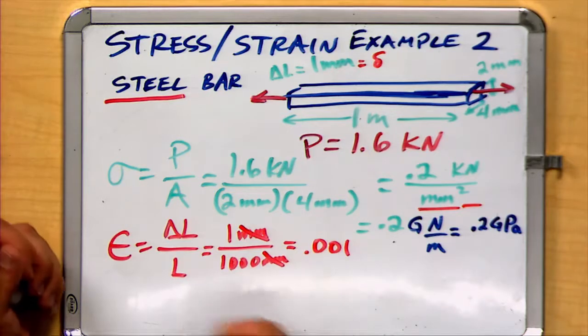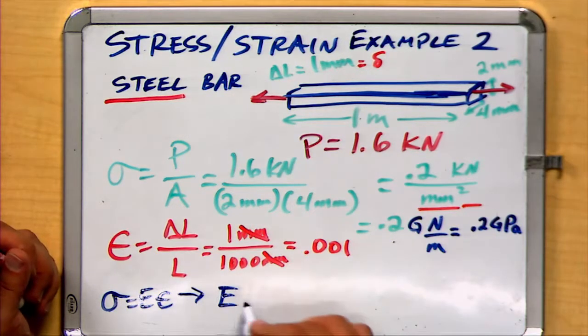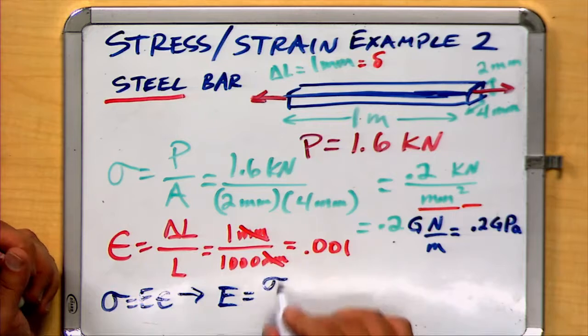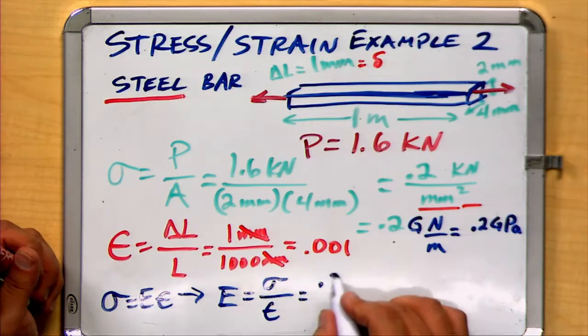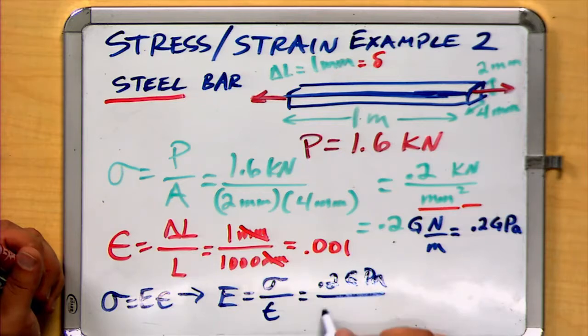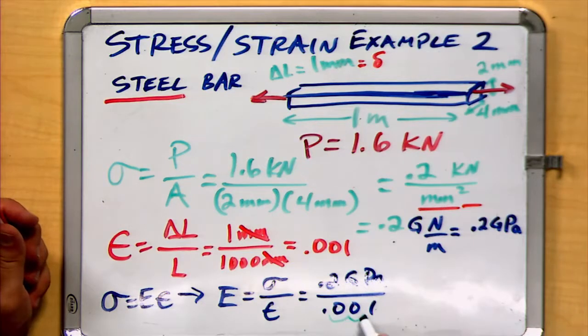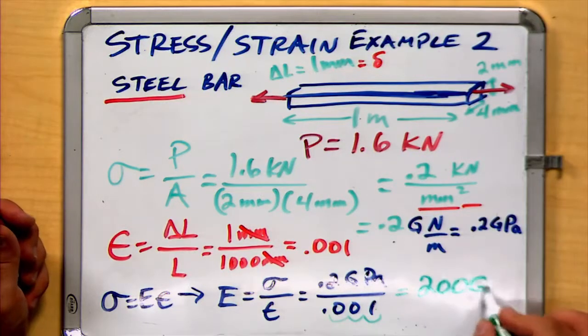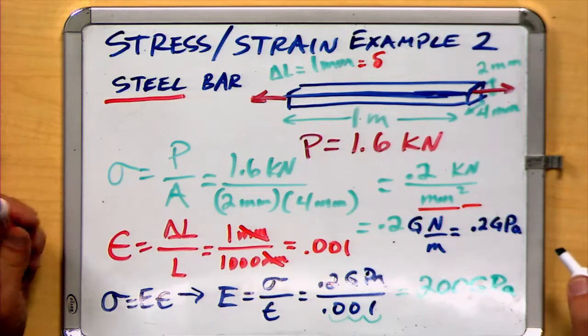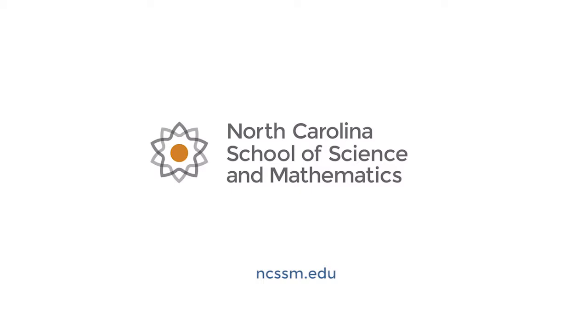If we recognize again our relationship, sigma equals E epsilon. This time, let's solve for the Young's modulus, E, which is equal to the stress divided by the strain. In this case, we get 0.2 gigapascals divided by 0.001. Move that decimal place three places by multiplying by 1,000, and we get a value of 200 GPa, gigapascals, which is a central value for the modulus of elasticity of steel.